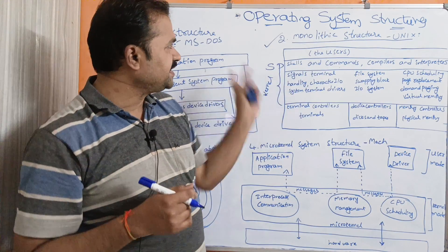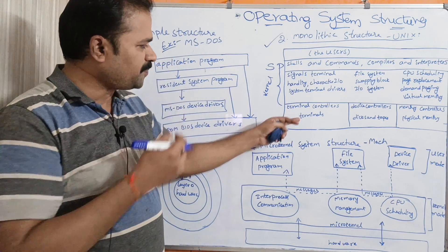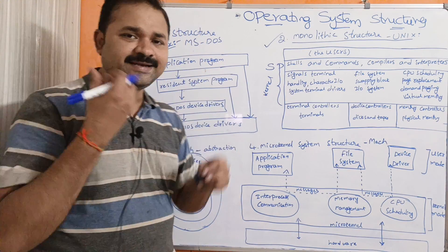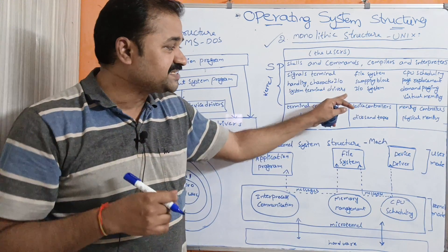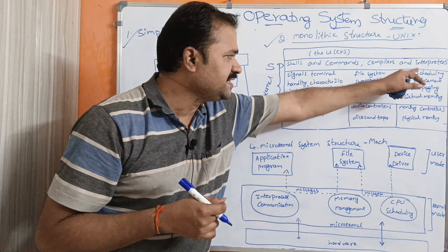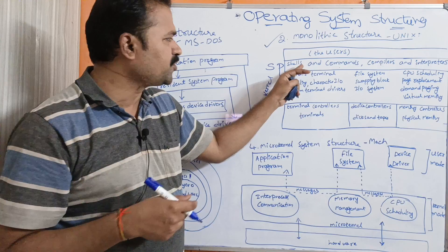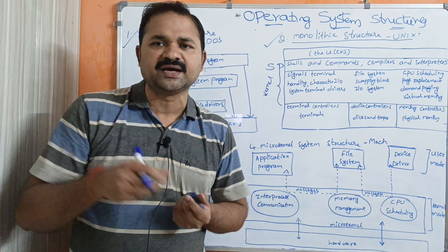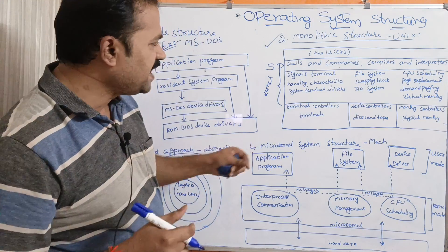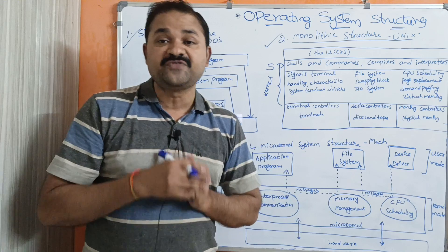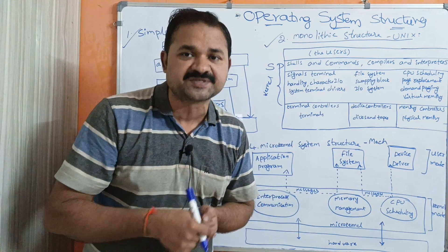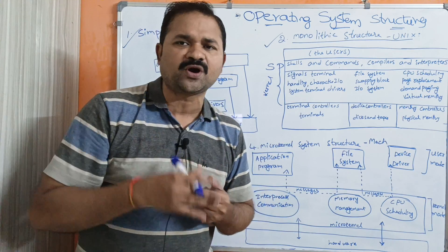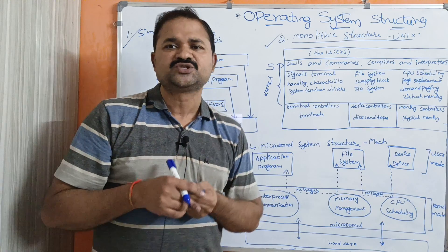The monolithic structure can be divided into two main parts: kernel and system programs. The kernel is further subdivided into device drivers and functionalities. System programs include shells, compilers, interpreters, and assemblers. The major problem is that if you want to add an extra functionality to the kernel, since the kernel already has too many components, adding a new one makes it quite large and complex, making it very difficult to implement.